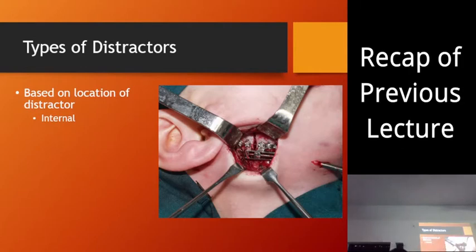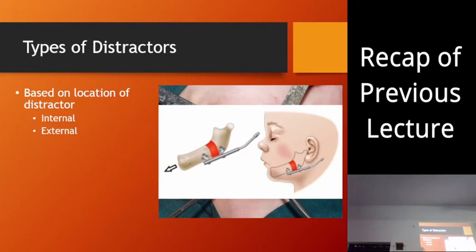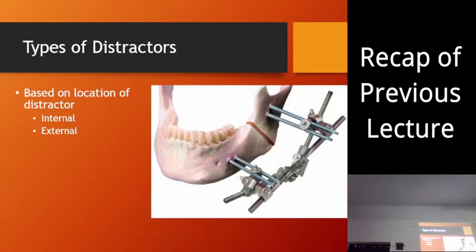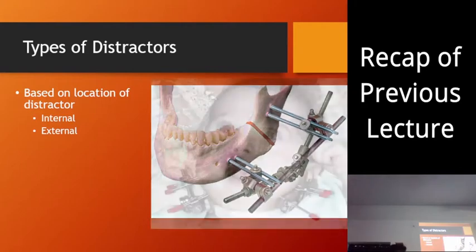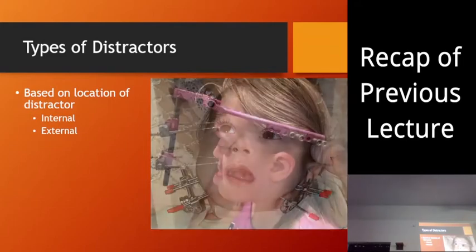If the part of the distractor device where movement occurs is inside the soft tissue, this is an internal distractor. This is an example of an internal distractor. We also have pin fixation devices — this is an external distractor because pins are attached to the segments and the main distractor device where movement occurs is outside the soft tissue.